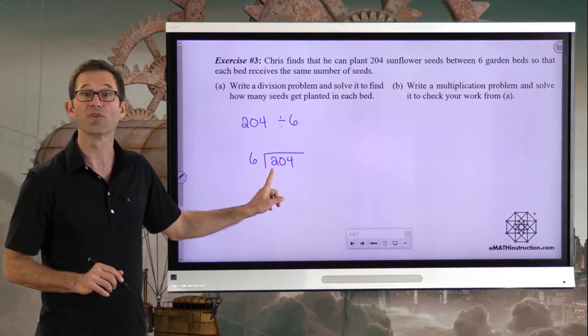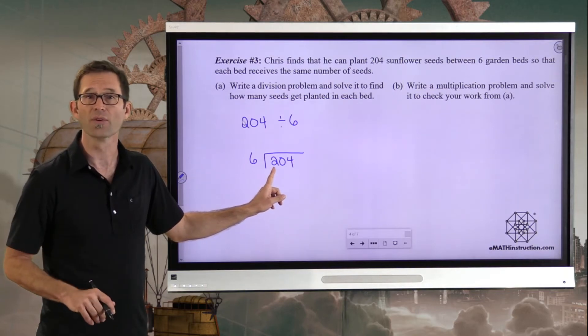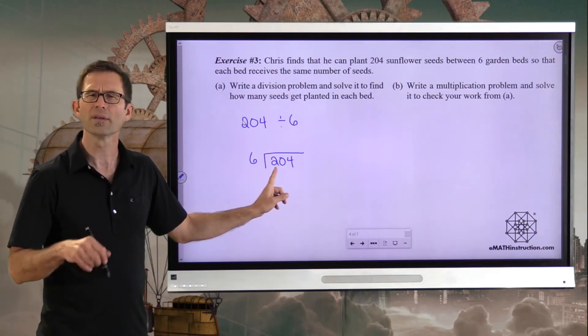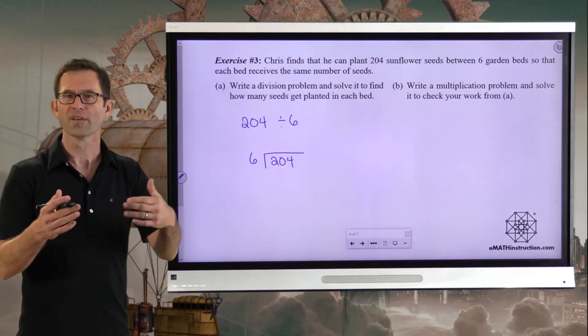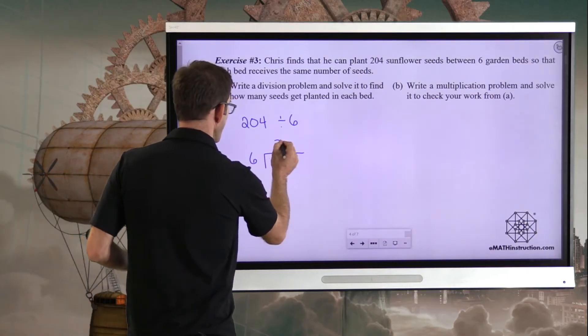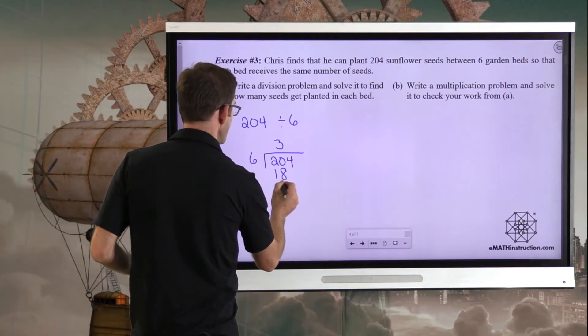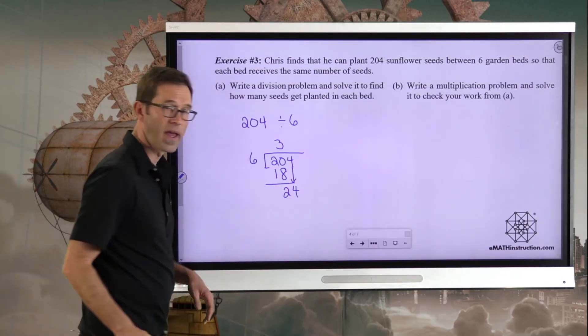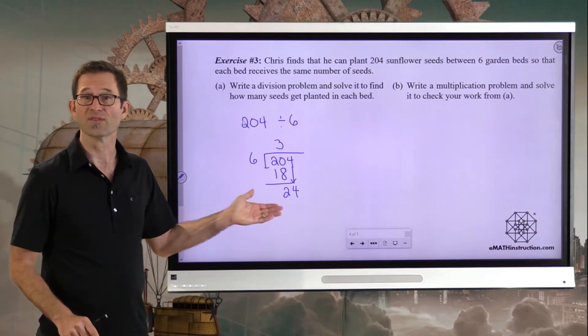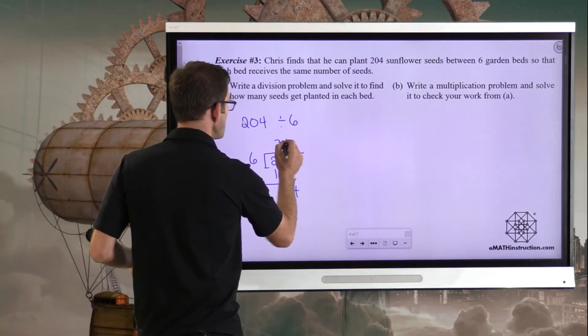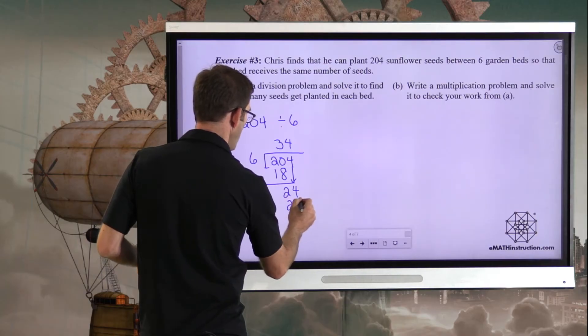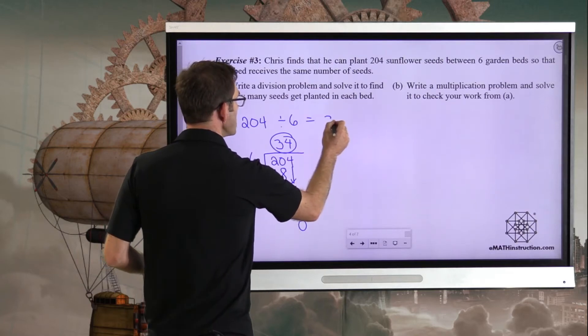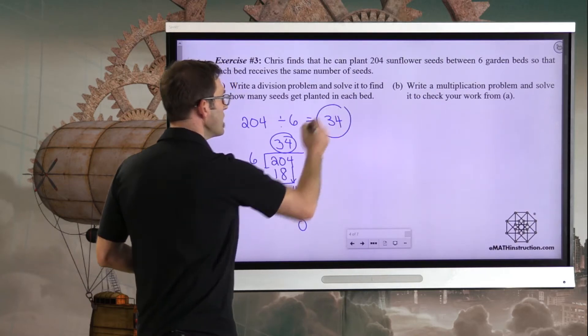I'll put my 204 under the division symbol and have six out here. I think, how many times does six go into two? Six doesn't go into two because two is smaller than six. Well, how many times will six go into 20? Let's see, two times, three times, oh, three times, because three times six is 18. So three times six is 18. I subtract, I get two, and then I drop the four down. I ask myself, how many times does six go into 24? That's four times. Four times six is 24. I subtract, and I get a remainder of zero. So 34 seeds in each one of those beds.